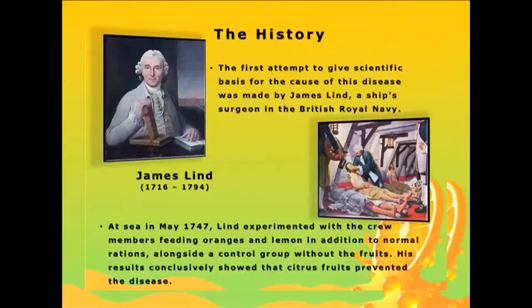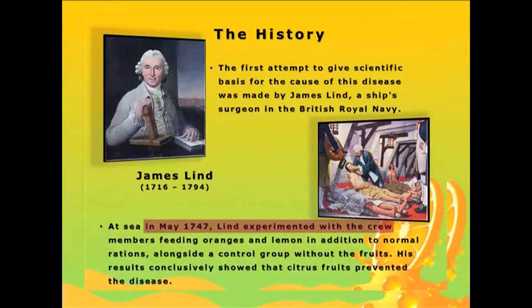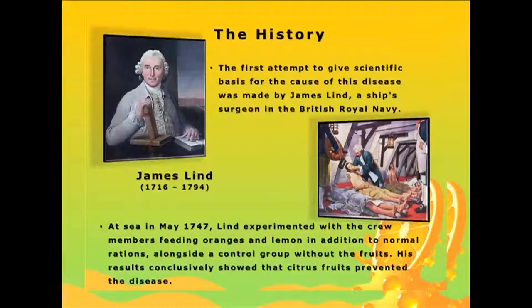The first attempt to give a scientific basis to scurvy was done by James Lind. In 1747, James Lind, being a surgeon of the British Royal Navy, conducted an experiment on crew members where one group was fed a normal routine diet, while the other group, along with their routine diet, received lime or lemon. This experiment is considered the first in medical science to incorporate a legitimate control group. James Lind could prove that inclusion of lime and lemon could prevent the symptoms of scurvy.